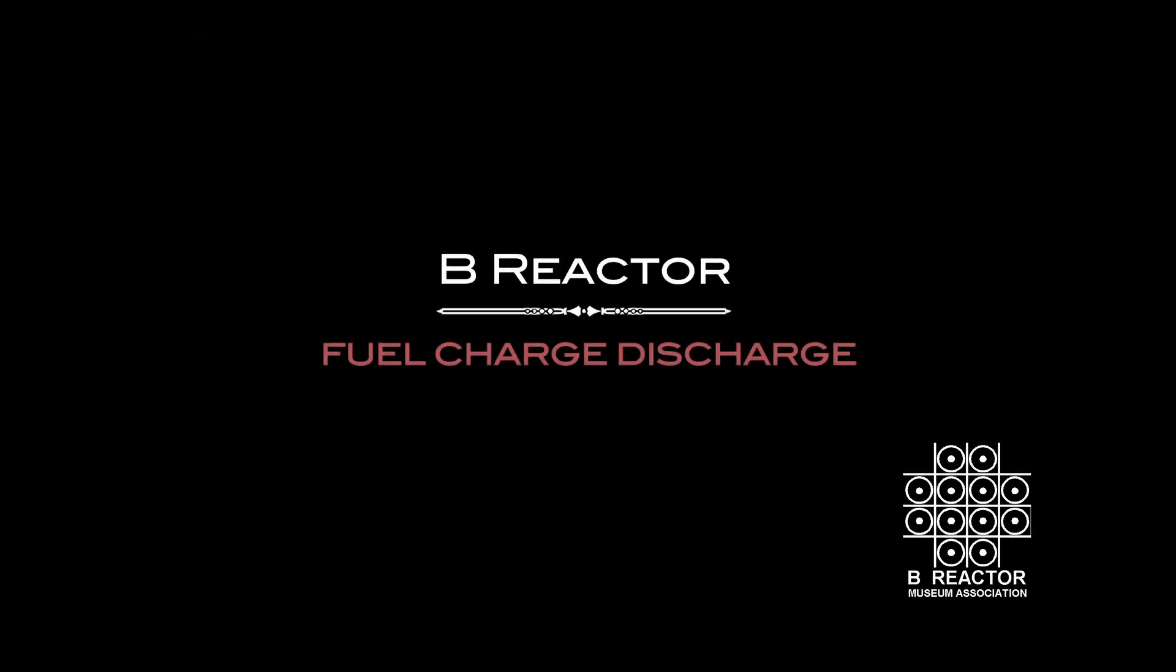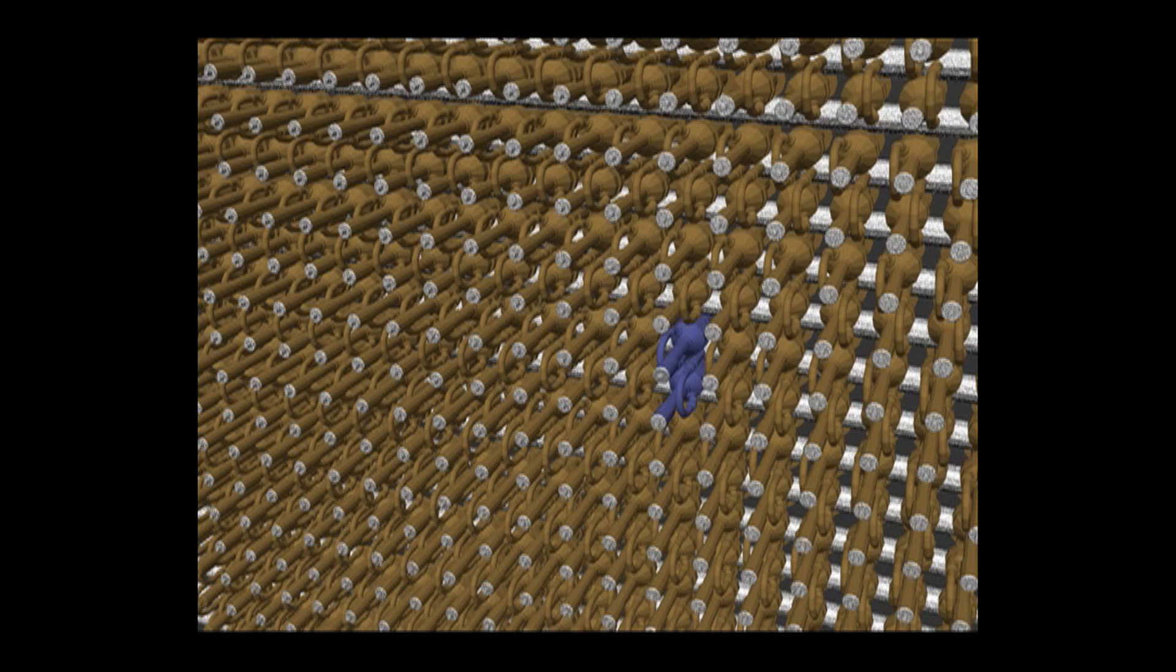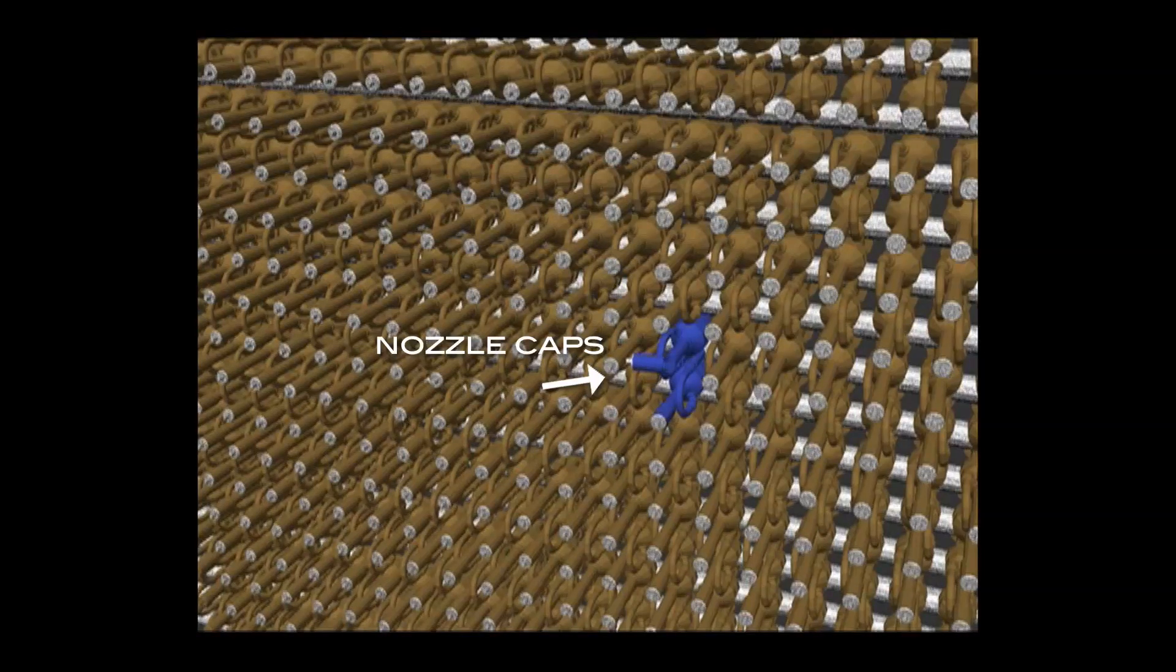Fuel Charge Discharge. To load a fuel column the reactor is shut down, the water in the tube row of the tubes to be charged is reduced to a trickle flow, and nozzle caps on both ends of the tubes are removed.